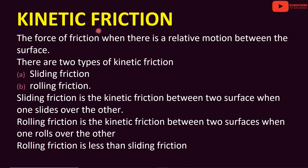Kinetic friction is the force of friction when there is a relative motion between the surfaces. There are two types of kinetic friction: sliding friction and rolling friction. Sliding friction is the kinetic friction between two surfaces when one slides over the other.